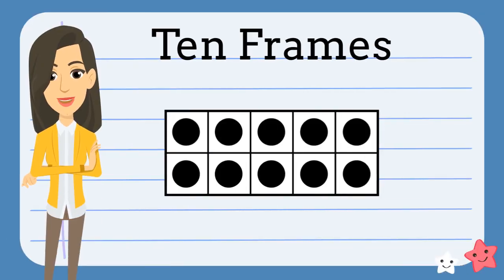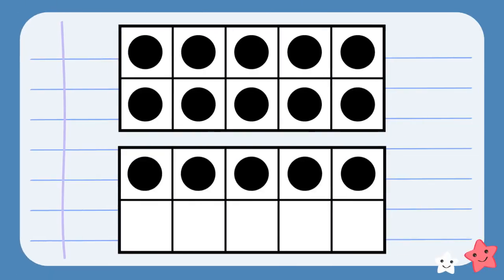We can use 10 frames to make counting teen numbers much easier. Here we have two 10 frames. The top 10 frame is full, so we know that that is 10. And the bottom 10 frame isn't full, so we know that we can count on. So now let's count the bottom frame. 11, 12, 13, 14, 15. We have 15 dots.